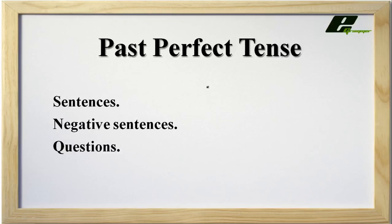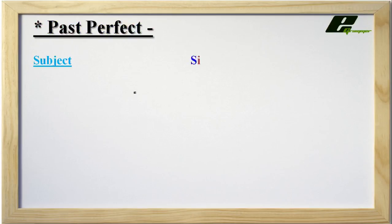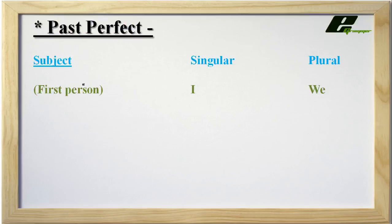Before we start some sentences, let us see subject first. Subjects are of three types which is divided into two parts. First person is the person who speaks. In first person, singular is 'I' and plural is 'we'.